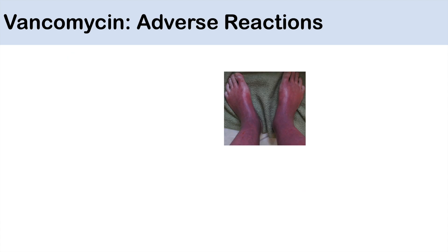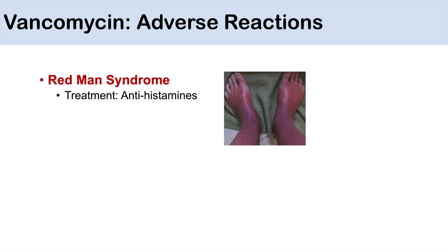Vancomycin use does not come without its risks. One adverse reaction is red man syndrome, also known as erythroderma — essentially the skin becomes very red, as seen in this image. It can occur more frequently when vancomycin is given too quickly, and the treatment for red man syndrome is antihistamines. Other adverse reactions include nephrotoxicity — because vancomycin is renally excreted, it can cause nephrotoxicity — and there is also some ototoxicity as well.